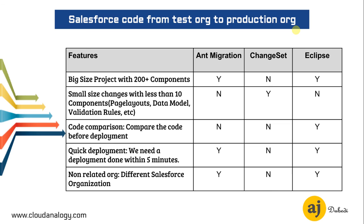I've come up with a list comparing the different deployment tools. ANT migration and Eclipse are more or less the same, but Eclipse gives us the added advantage of coding as well — features like code comparison can be done in Eclipse. In most cases we would recommend not using changesets if you have code access or metadata API access; in that case you should go ahead and use ANT migration or Eclipse.